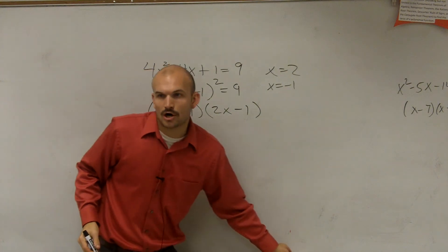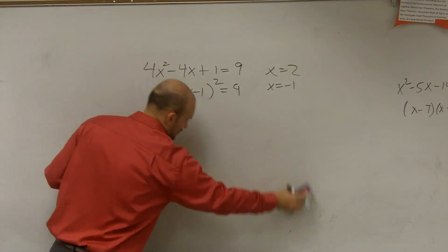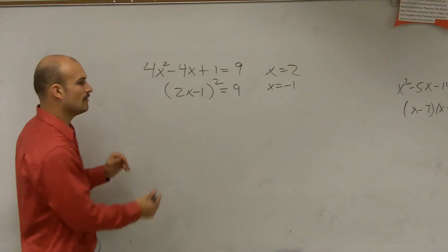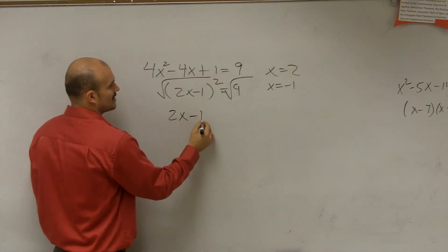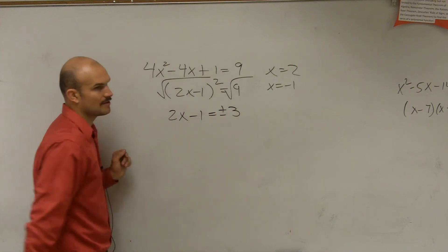Can we solve that without using the zero product property? Yes, of course we can. How do we solve that? Inverse operations. So therefore, you have 2x minus 1 equals plus or minus 3.